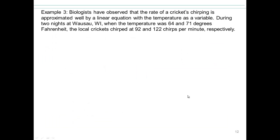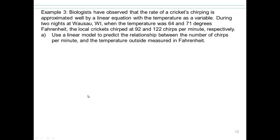All right, let's take a look at this next example. Biologists have observed that the rate of crickets chirping is approximated well by a linear equation with the temperature as a variable. During two nights in Wausau, Wisconsin, when the temperature was 64 and 71 degrees, the local crickets chirped at 92 and 122 chirps per minute, respectively. So let's put our questions here. They're saying, use linear model to predict relationships between number of chirps per minute and the temperature outside.